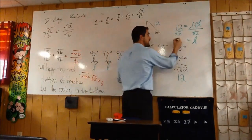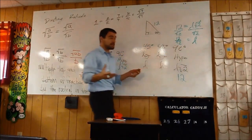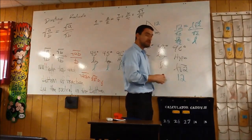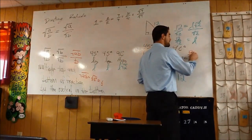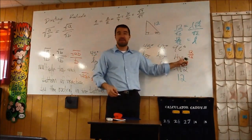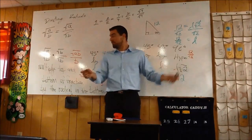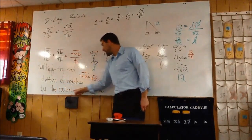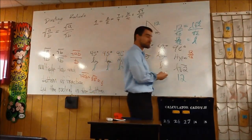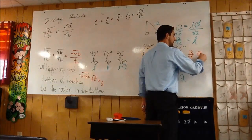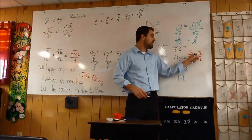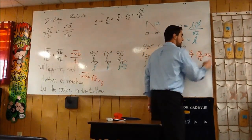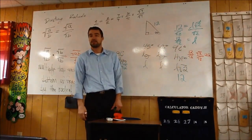Technically, the correct answer is 12 divided by the square root of 2. However, you can't have a square root in the bottom. So we need to take 12 over square root of 2 and rationalize the denominator. I'm going to multiply by 1 — essentially — but it won't look like 1. I'll multiply top and bottom by the radical in the bottom, which is the square root of 2. That fraction — square root of 2 divided by square root of 2 — is just 1. So the numerator becomes 12 square root 2.